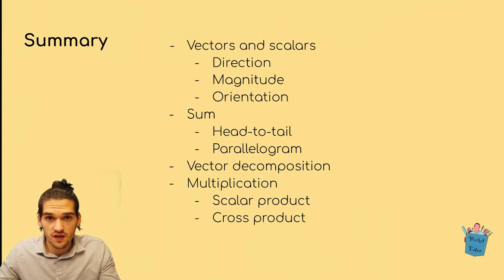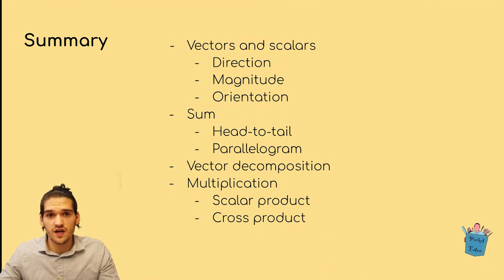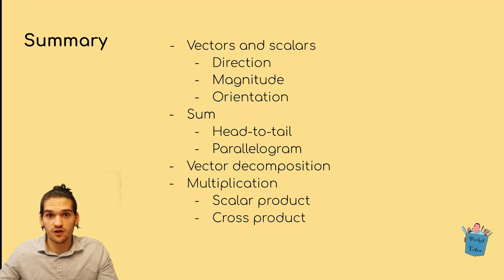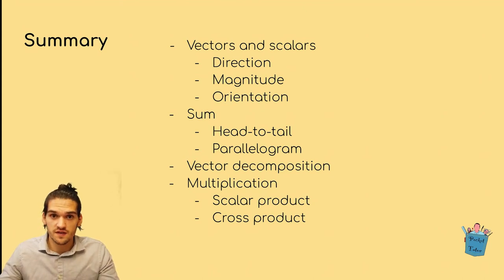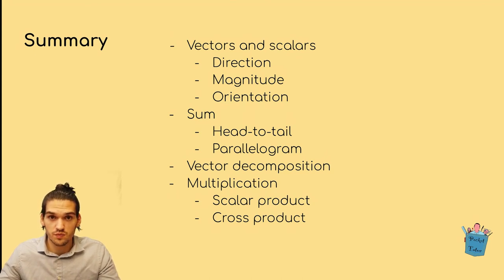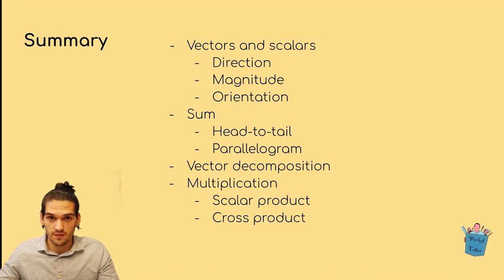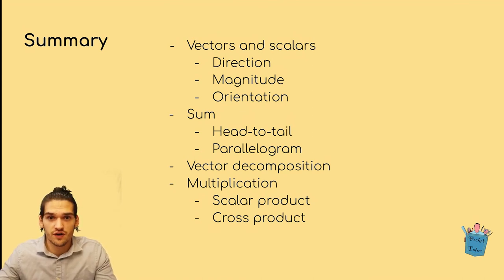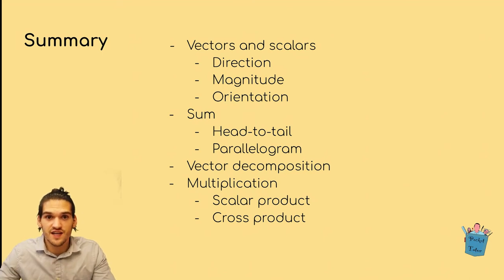So what we've seen in this lesson is a basic introduction to vectors. We've seen the difference between vectors and scalars, that a vector must have a magnitude, a direction, and an orientation, simple operations like sum and difference using two different methods, multiplication by real numbers, and the cross product and scalar product. Please let me know if you have any questions or want anything explained in more depth. See you next lesson!